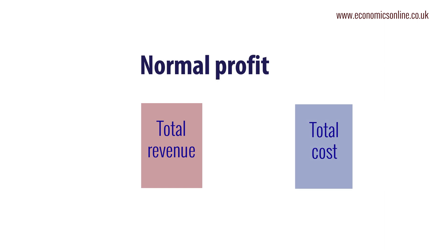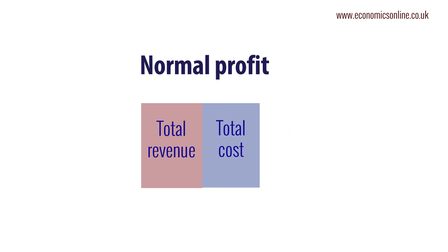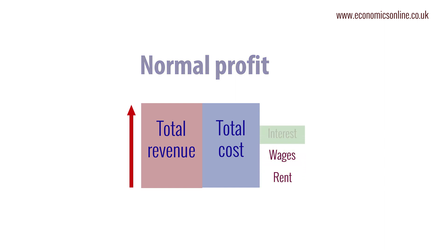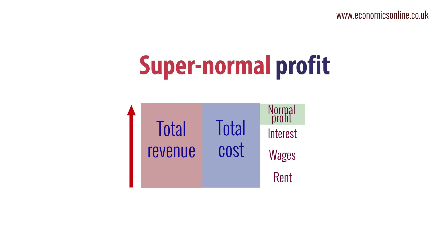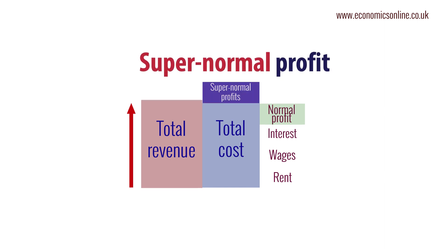Power in the market is dispersed between all firms. Normal profit occurs when total revenue coming in from sales equals total costs going to the factors of production. Total costs include rents, wages, interest, and normal profits. Normal profit occurs when the entrepreneur just covers opportunity cost.